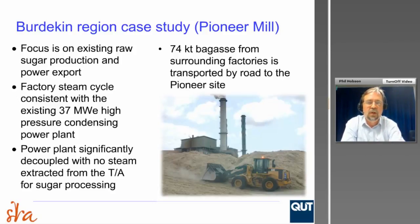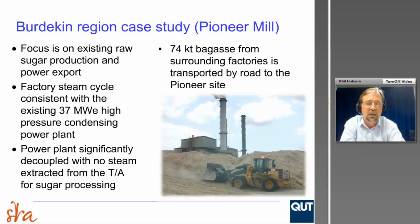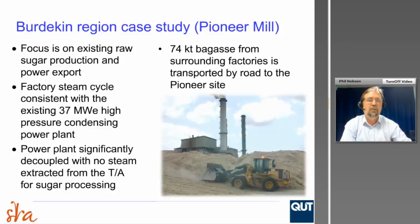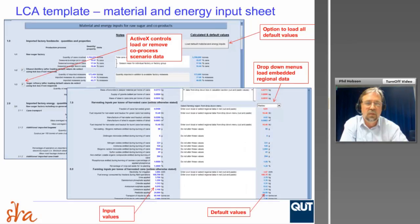The Burdekin Region Case Study focused on existing raw sugar production and power export, based on their existing 37 MW high-pressure condensing power plant. This power plant is not significantly integrated into the sugar production process, and there's no steam extracted from the turbo-alternator for sugar processing. It also involves importing bagasse from surrounding factories transported by road, with the associated environmental impacts from that transport process.